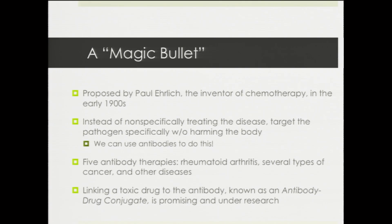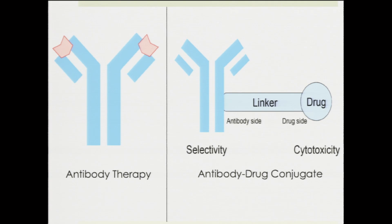The idea of targeting a pathogen is really useful for therapies. In the early 1900s, Paul Ehrlich — the inventor of chemotherapy — proposed the idea of a magic bullet. Chemotherapy is nonspecific, meaning it targets both healthy cells and cancerous cells. He proposed: what if there was a way to only target cancerous cells and leave healthy cells still healthy? Antibodies are a natural realization of that idea. An antibody in blue binds to the antigen — the target — in red, and once it binds, it can destroy the pathogen or cancerous cell and hopefully eliminate that disease from the body.